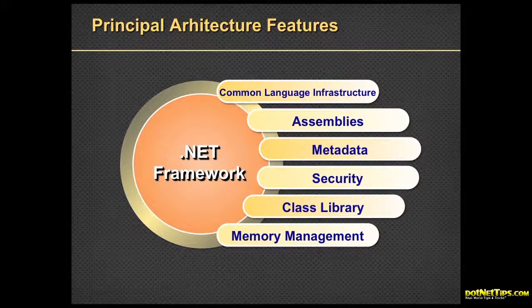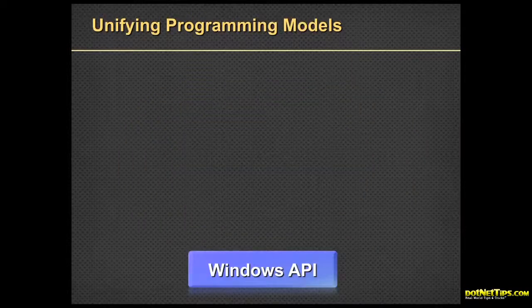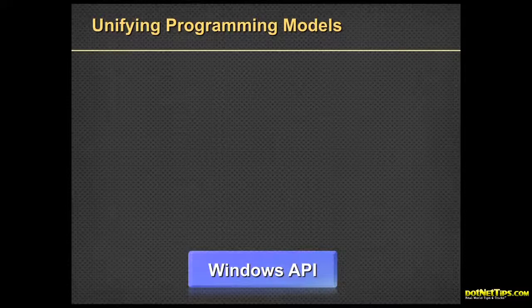Memory management is a big deal — at a recent interview, senior-level developers could not explain to me how memory management works. One of .NET's big goals was to unify all the best things in programming up to that time. Everything in Windows starts with the Windows API. Everything you see on screen or done in Windows comes from the API one way or another. In the old days we had to talk directly to the Windows API, which is very dangerous — you can literally blue screen your machine if you don't do it right.